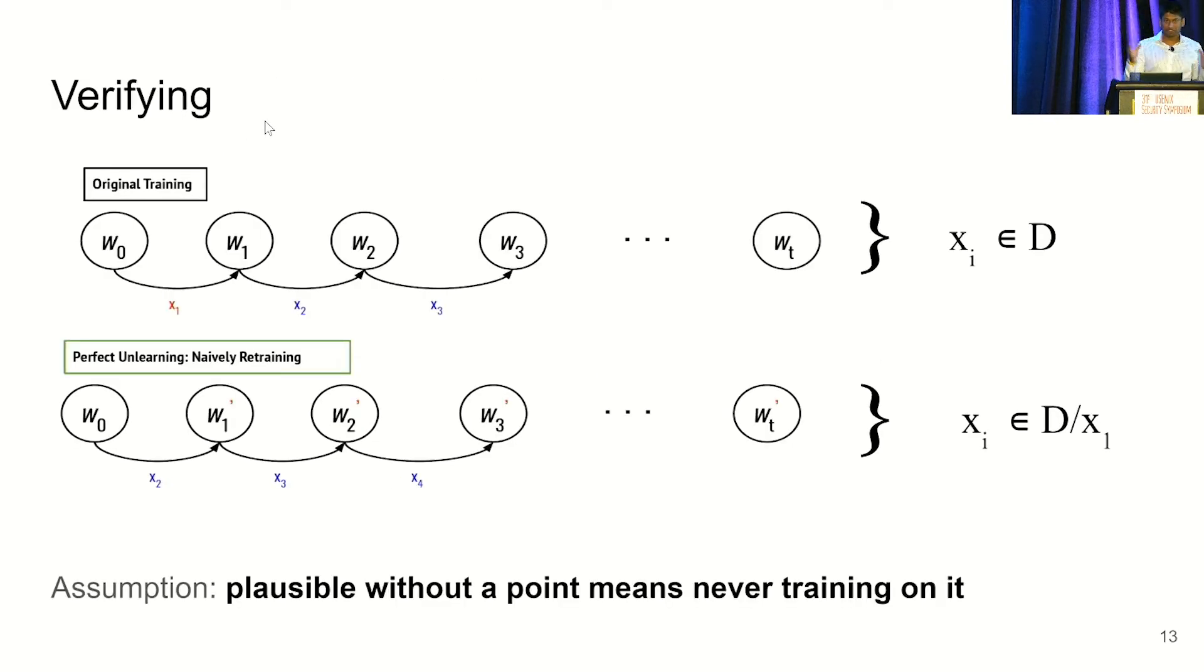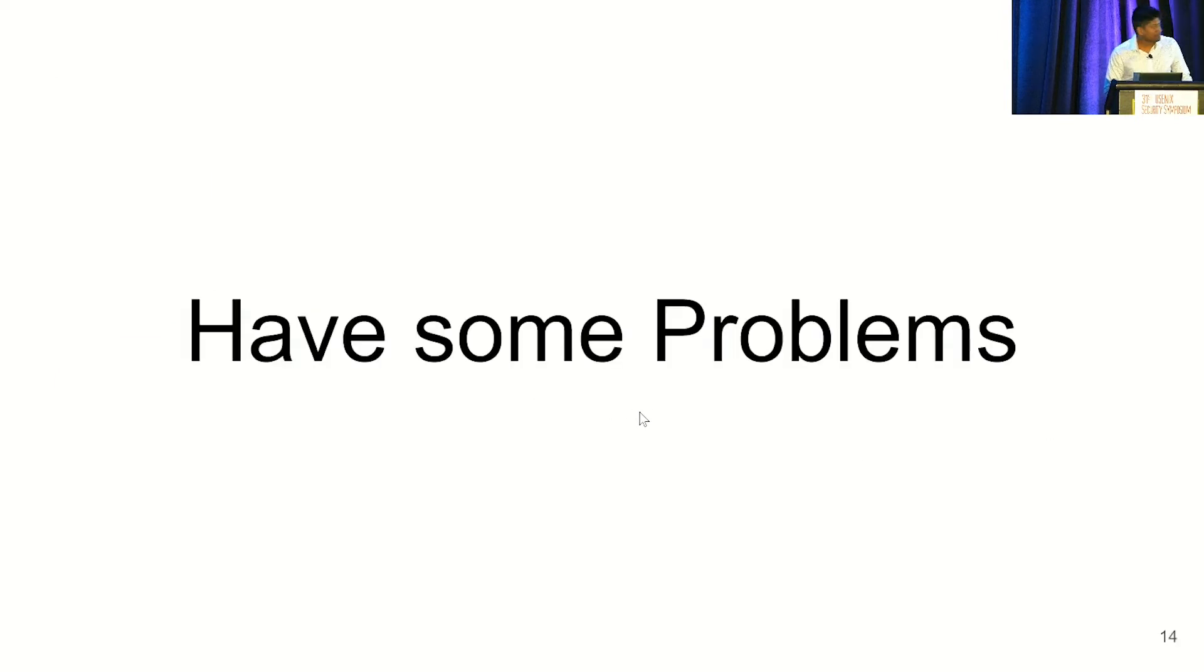With this framework for verification, what would verifying unlearning look like? And essentially, an entity would submit a POL, and the verifier would first check the validity of the POL, and then check what data points were used. And if a particular data point wasn't used, we'd say the entity had unlearned that data point. But if it was used, then it fails unlearning. But really, a key assumption in this plausibility model is that plausible without a point means never training on it. And that's something we can attack. So we have some problems.